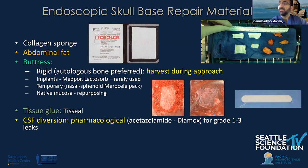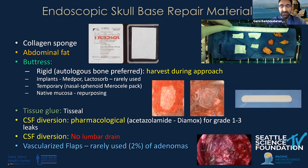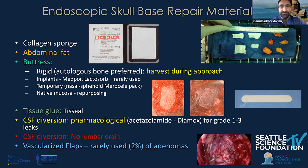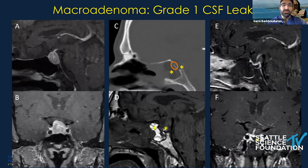We often use TissuGlue in some cases, depending on whether we're using a flap, with the only exception being for Rathke's cleft cysts when we are marsupiating the cysts. Pharmacological CSF diversion is used and no lumbar drain. In this series, only two percent of adenomas had a vascularized flap, but we do recognize that other pathologies have a higher rate of flap utilization.